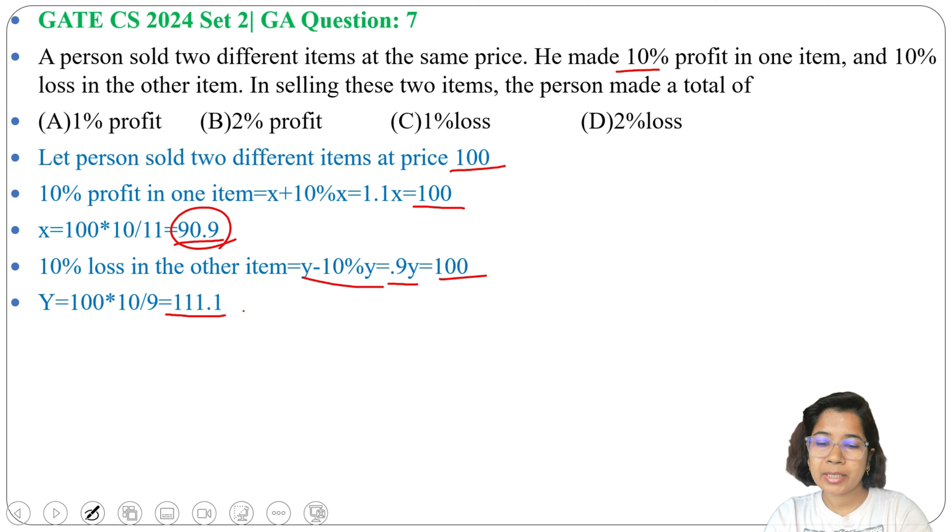So the cost price is 111.1 and he sold at 100, that's why he got a loss of 10%.